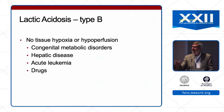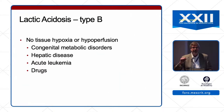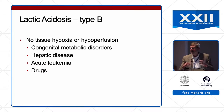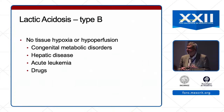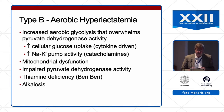Traditionally, type A is thought of as anaerobic glycolysis, and type B is where there's no tissue hypoxia or hypoperfusion — including congenital metabolic disorders, hepatic disease, and acute leukemia as the poster child of malignancy-associated lactic acidosis. Hepatic disease was traditionally thought to cause lactic acidosis because the liver can't metabolize lactate, but recent data suggest production may be more important than failure to clear. Many drugs are also implicated.